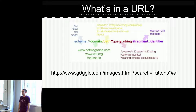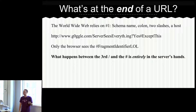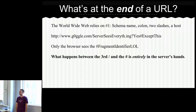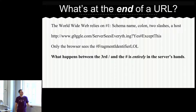Here's a more visual breakdown. What are all those parts used for? The World Wide Web relies on the schema name, colon, two slashes, and the host — that's all the World Wide Web cares about as far as HTTP and the actual standards in white papers, your routers, and the DNS. That's up to that third slash. Only the browser cares about the fragment identifier at the end — the server will probably never see that unless you do some weird stuff. And this is the important part for me: what happens between the third slash and the hash mark is entirely in the server's hands.